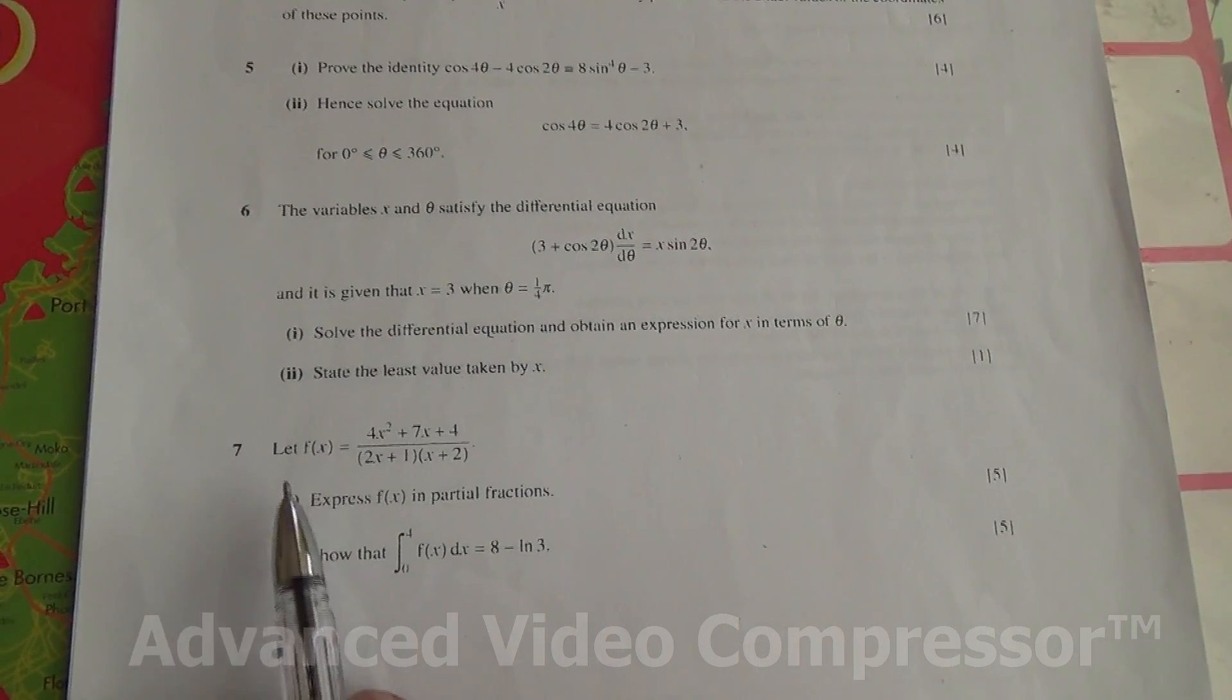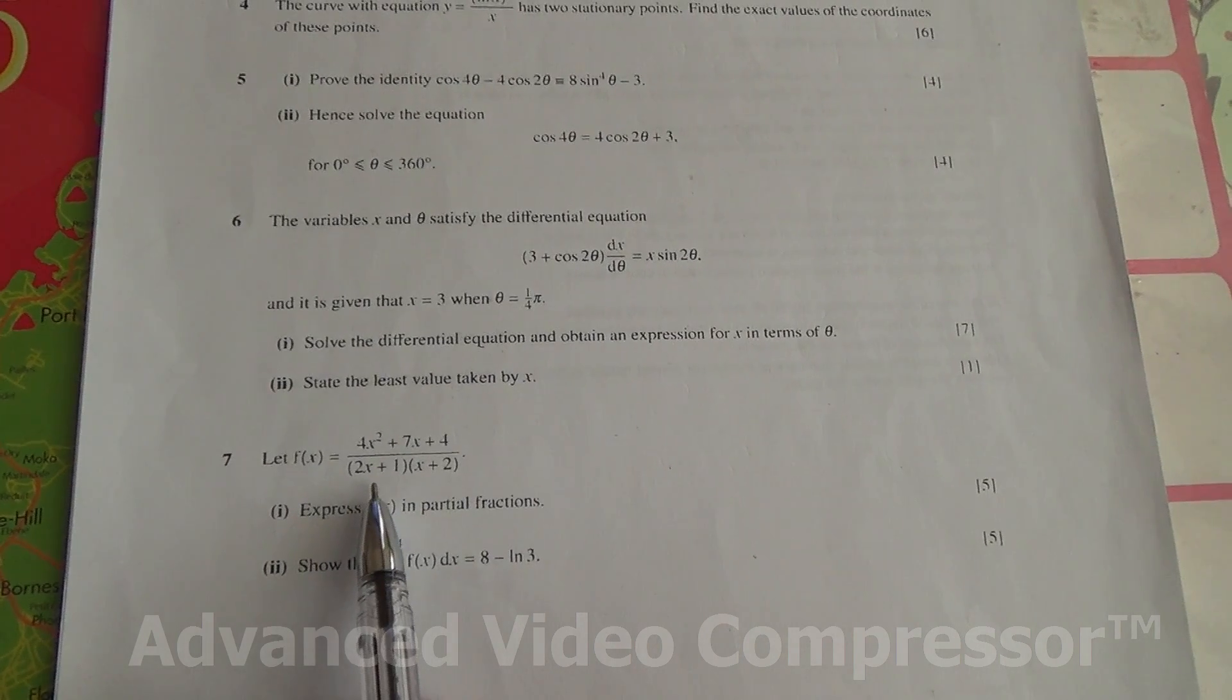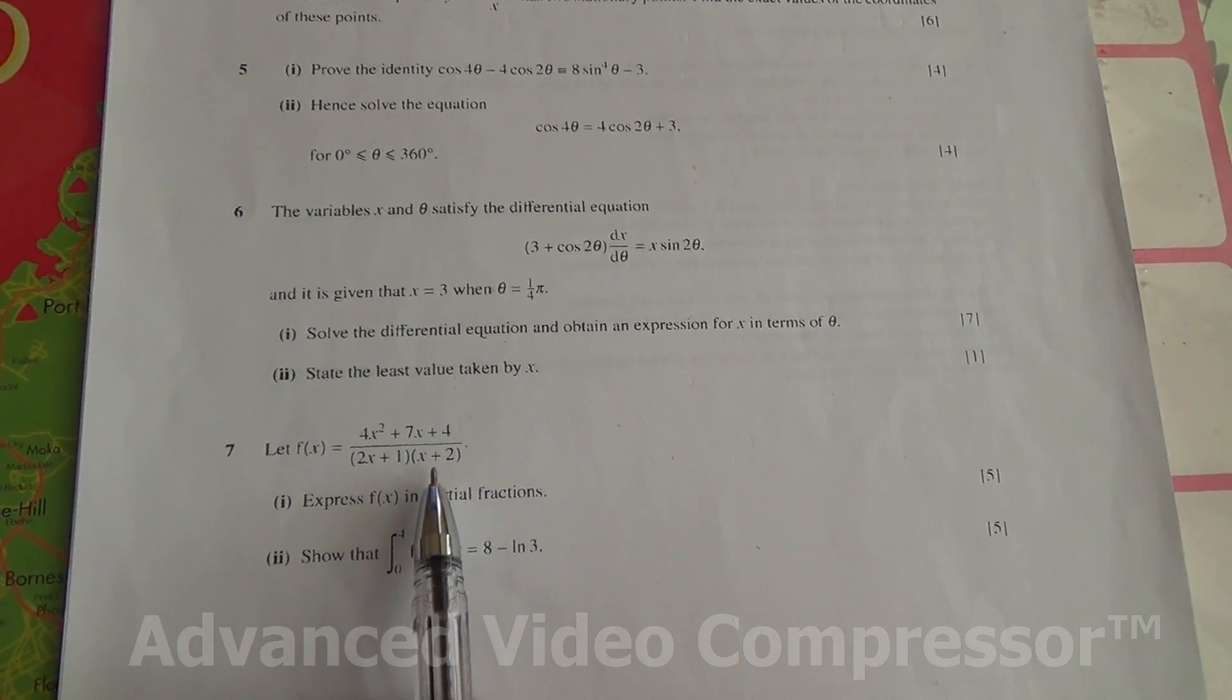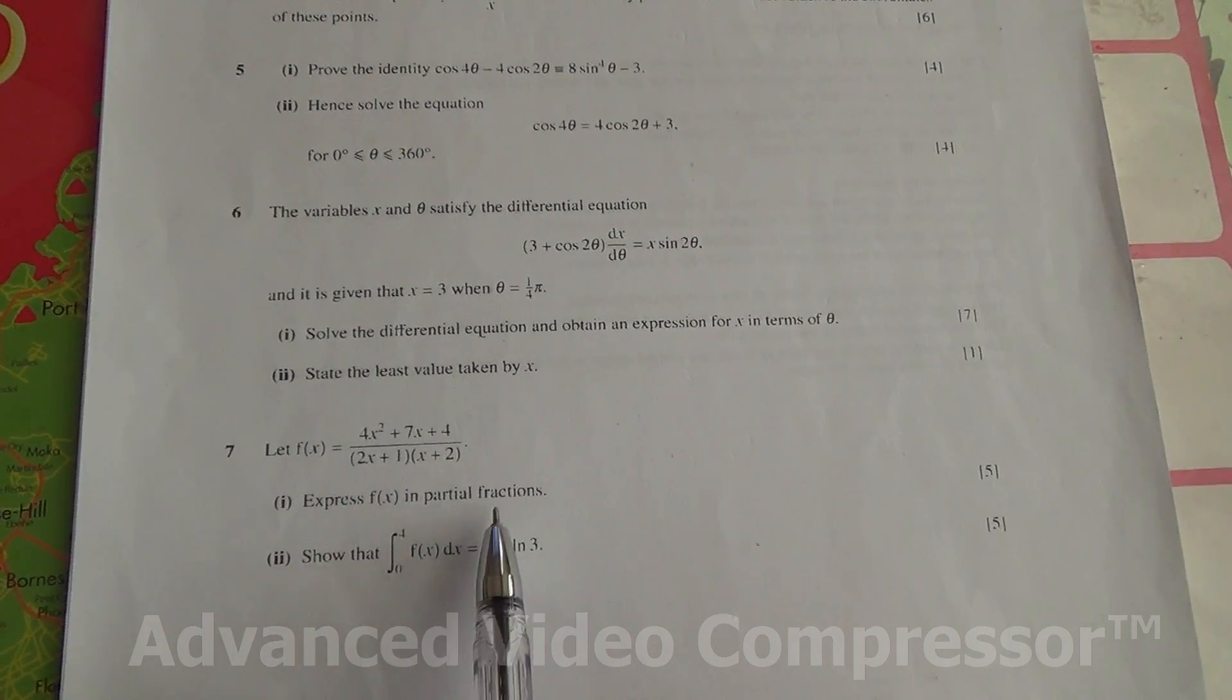Hi, question number 7. Let f(x) equal 4x squared plus 7x plus 4 over (2x plus 1) times (x plus 2). First part, express f(x) in partial fractions.